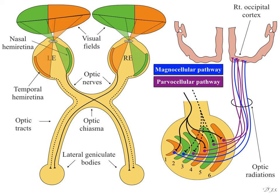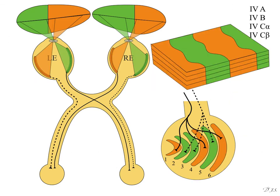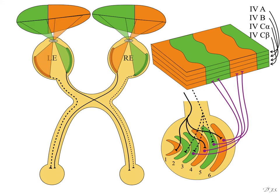Let's look at the layers of interest in the occipital cortex. The main layers are 4a, 4b, 4c alpha, and 4c beta, where both pathways are projected. The parvocellular pathway projects to layer 4c beta and the magnocellular pathway to layer 4c alpha. In addition, afferents from the ipsilateral and contralateral layers of the lateral geniculate body are segregated into alternating ocular dominance columns.